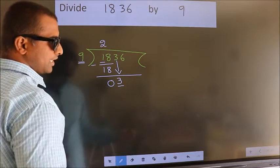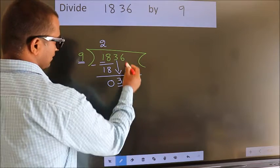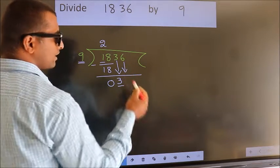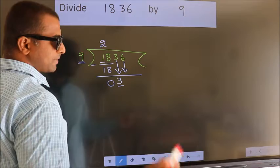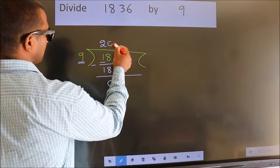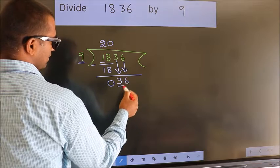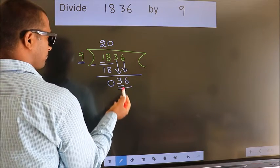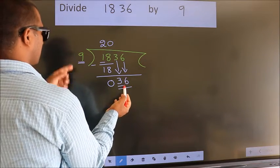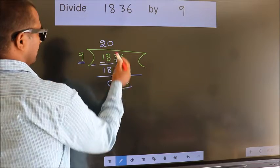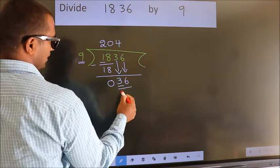So we should bring down the second number. And the rule to bring down second number is put 0 here. Then only we can bring down this number. So 36. When do we get 36? In 9 table.